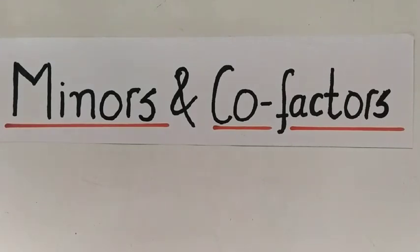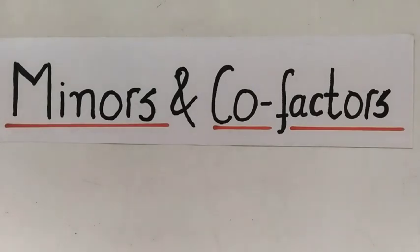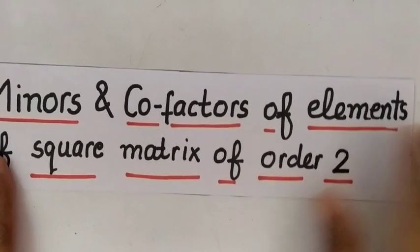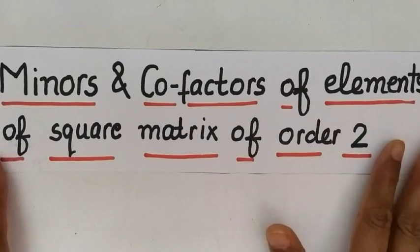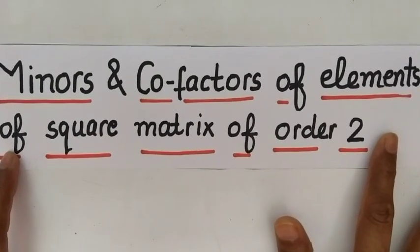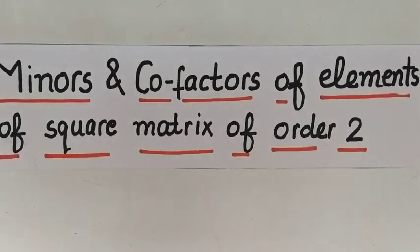We will study minors and cofactors of elements of square matrices of order 2 and 3. In the case of square matrices of order 1, the concept of minors and cofactors does not exist. So we will discuss one by one, starting with minors and cofactors of elements of a square matrix of order 2.